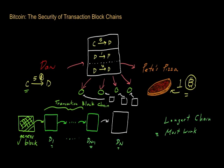Now let's imagine that Dan is dishonest, and after he eats the pizza — Pete is convinced, gets his Bitcoin from Dan, waits a bit, sees that there's a long chain out there containing a transaction, and sends the pizza over to Dan. Dan eats the pizza and then decides he doesn't want to behave honestly and wants to cheat Pete or defraud the system.